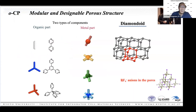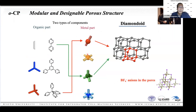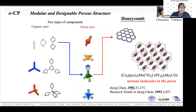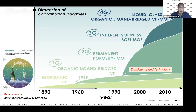This chemistry is modular and designable. For instance, in a diamondoid structure, you can choose straight ligands and tetrahedral metal ions to give a diamond structure. Richard Robson synthesized this kind of framework in 1989. Our group also synthesized a honeycomb structure using straight ligands and tetrahedral copper(I) ions with one site blocked, and in the cavities, gas molecules were accommodated. We synthesized this type of material in 1992.